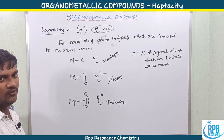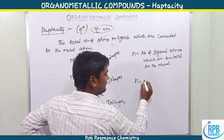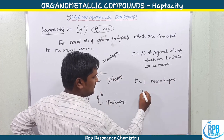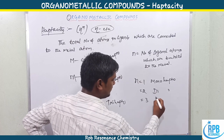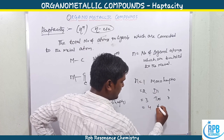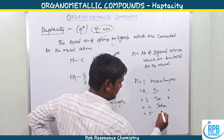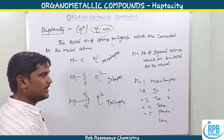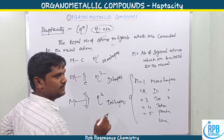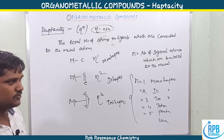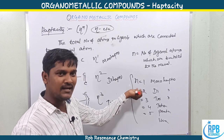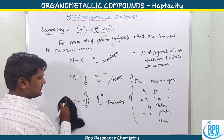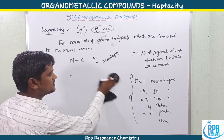Based on the n value: if n=1, it is called a monohapto ligand; if n=2, dihapto ligand; if n=3, trihapto ligand; and so on through tetra, penta, hexa, hepta, octa. This is the classification of hapticity for different ligands used in organometallic compounds.